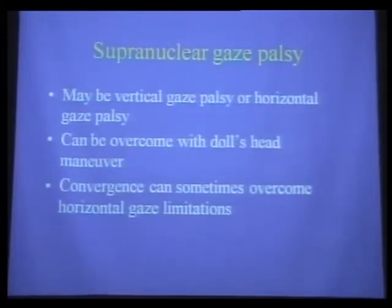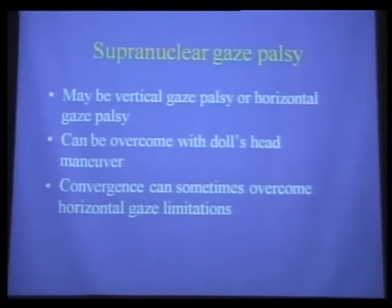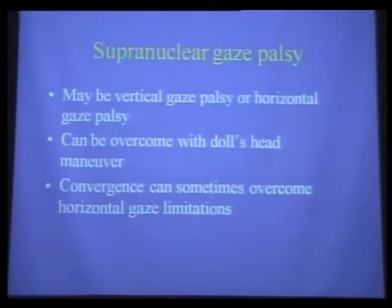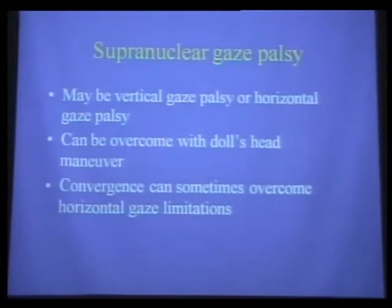Supranuclear gaze palsies can be vertical or horizontal. One of the key clinical questions is: can we make the eyes move? If you can make the eyes move with a doll's head maneuver—doll's eyes are not animated, so when you rotate the head, the eyes passively move—then you know the system can fire, the muscle is fine, and the junction is fine. If you can establish that the eyes can move, then you've already established that it is supranuclear, or at least partially supranuclear.